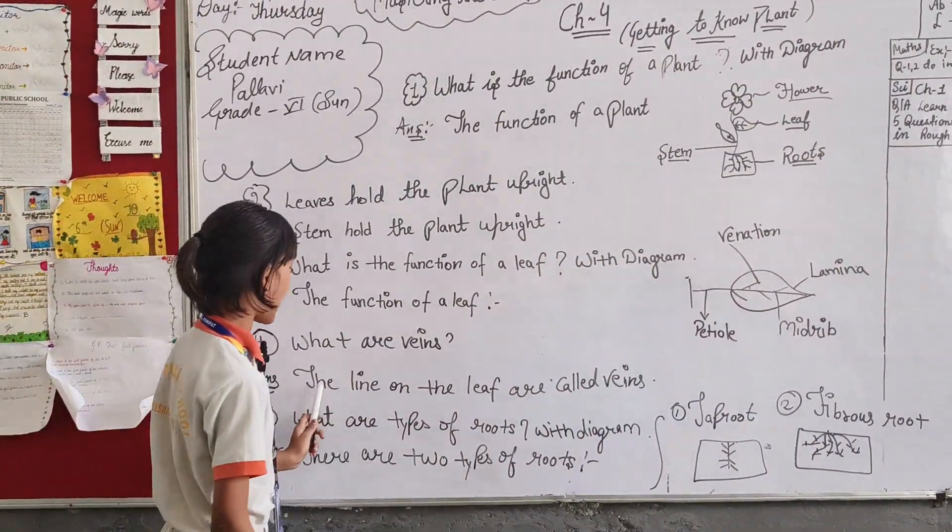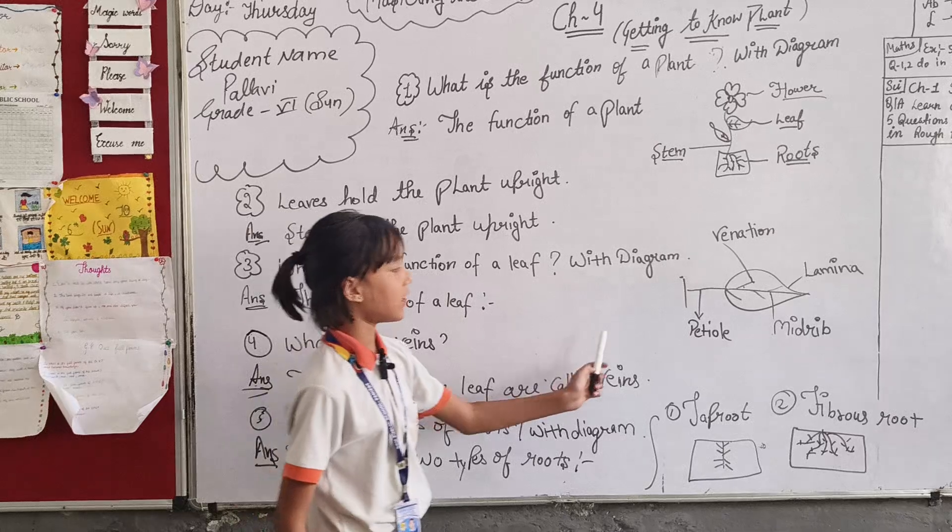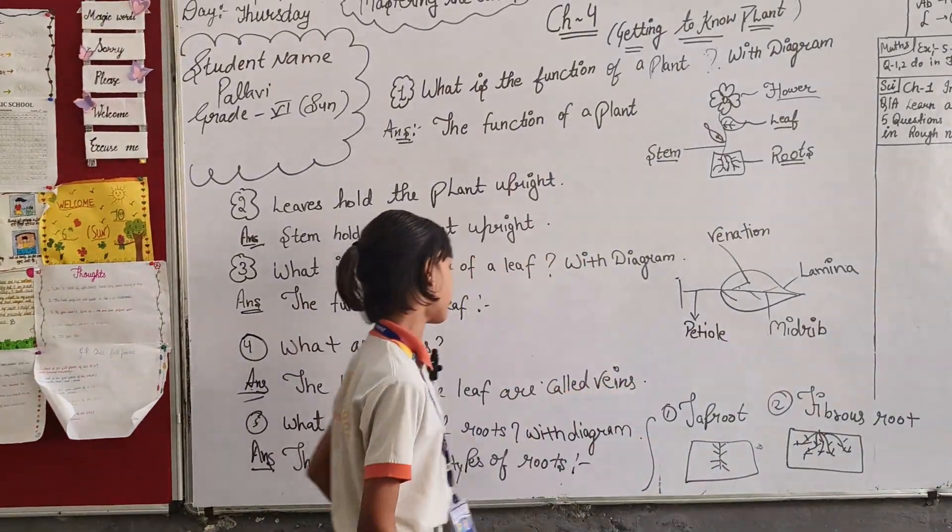Question fourth, what are veins? The lines on the leaf are called veins.